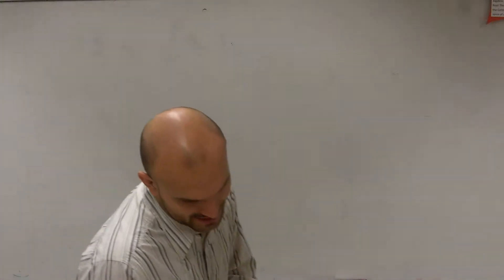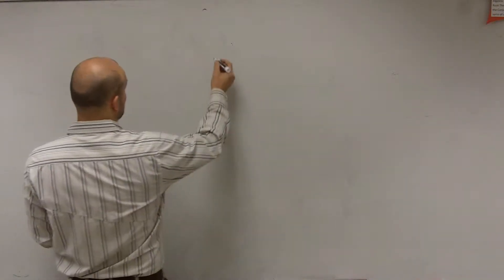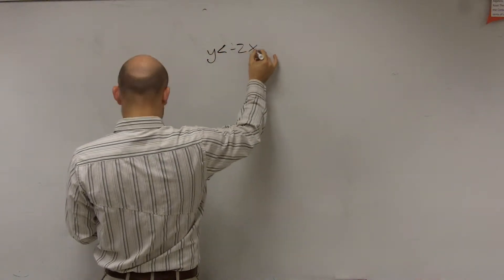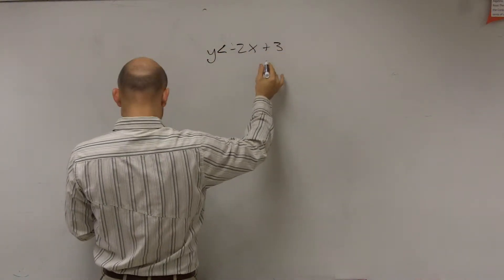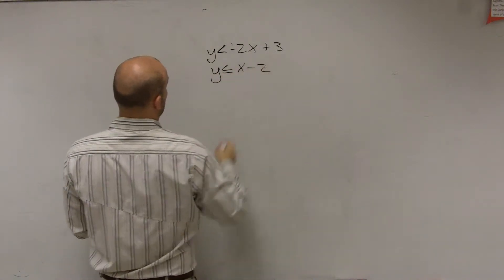So what we have is, let's go and look at number 8. Number 8 is y is less than negative 2x plus 3. This is page 33. So we have y is less than negative 2x plus 3, and y is less than or equal to x minus 2.